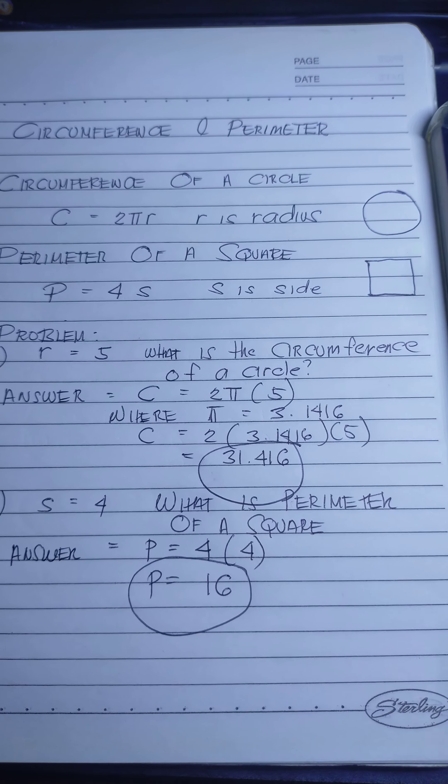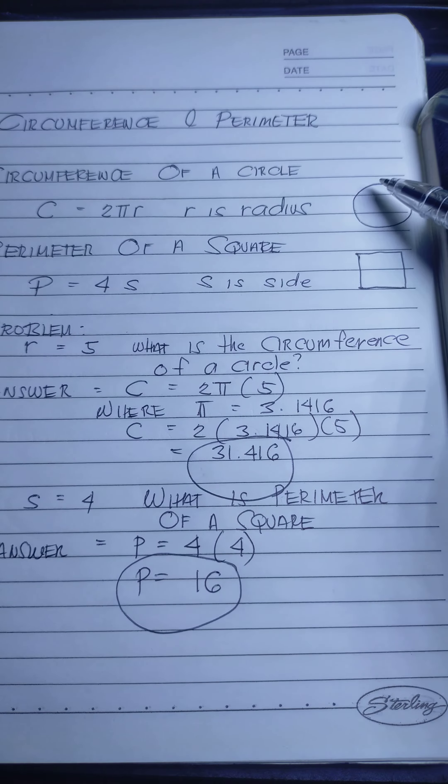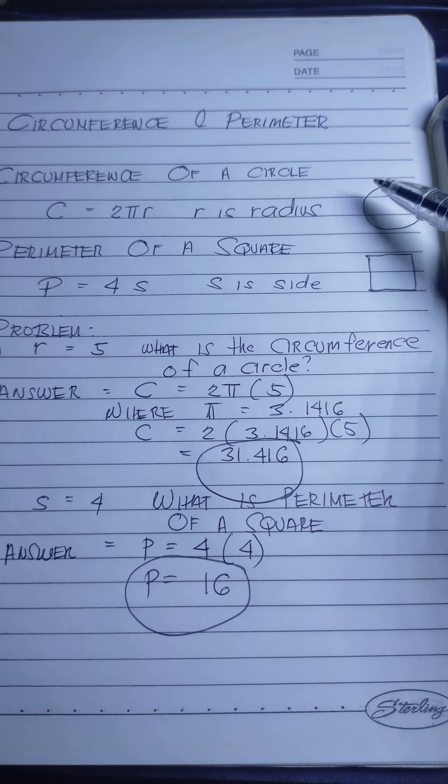When you say circumference, we're talking about the one on the outside of the whole circle. That's the circumference.